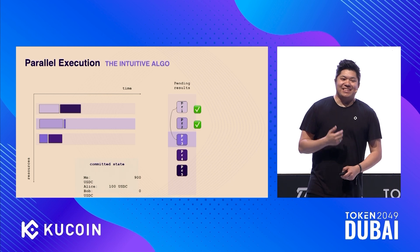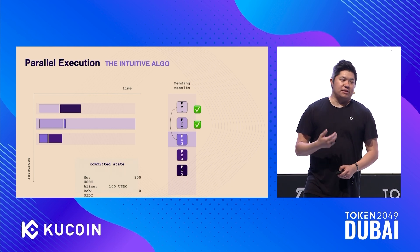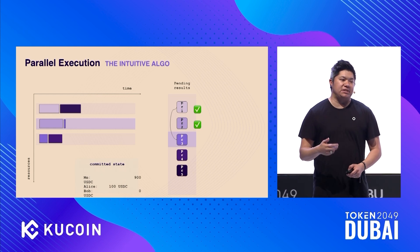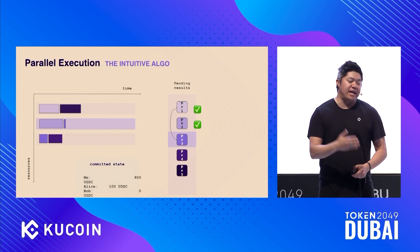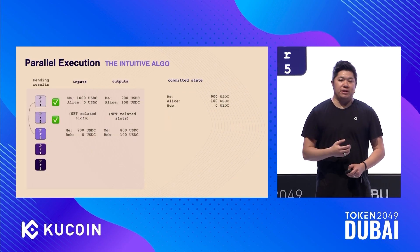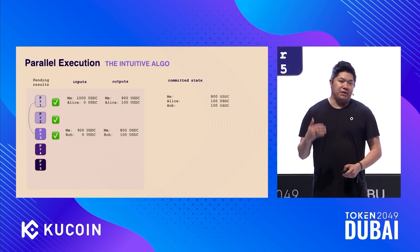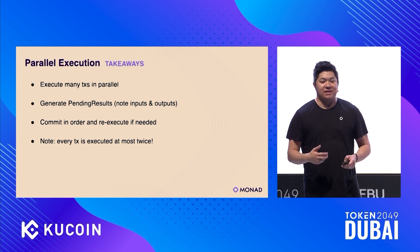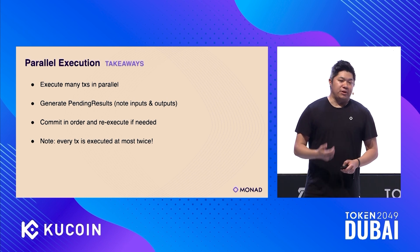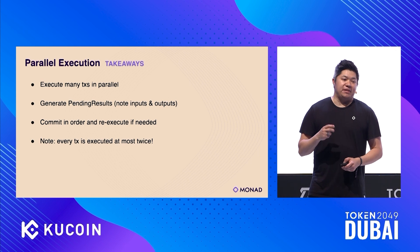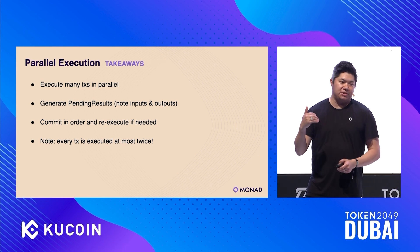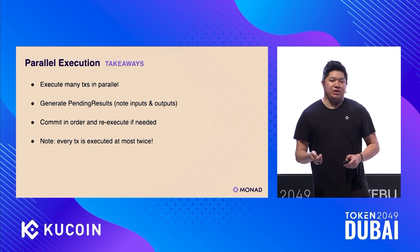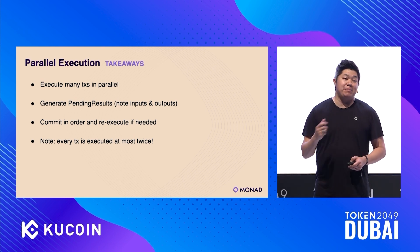The re-execution is actually very cheap because the state needed for this transaction is already in memory, and almost all execution costs are just reading state from SSD. So because the state is in memory, it's very fast to re-execute. When we re-execute now, the input is me at 900 and the output is me at 800 — correct. To summarize: that's literally all this algorithm is. Running many transactions in parallel, generating pending results, keeping track of inputs and outputs for each one, committing them in the same original order, and re-executing if needed. Every single transaction will end up getting executed at most twice.